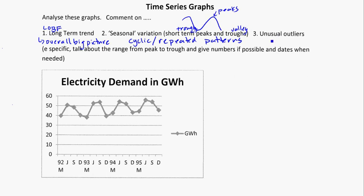An outlier could be something like a particular summer that was colder than the rest of the summers. In these descriptions, you need to be specific — talk about your ranges and give values when you can. Let's take a look.